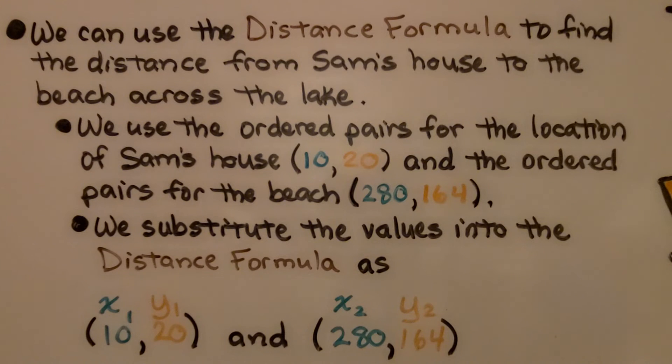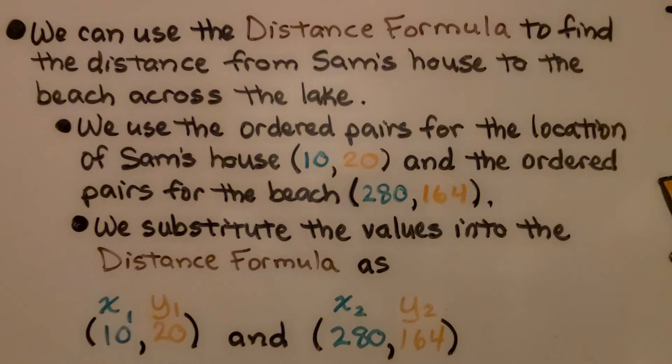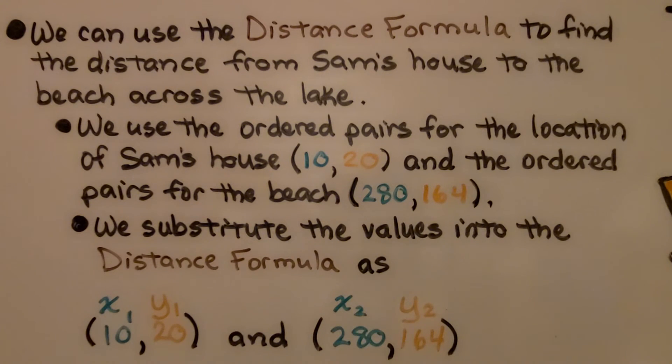We can use the distance formula to find the distance from Sam's house to the beach across the lake. We use the ordered pairs from the location of Sam's house, 10 for x, 20 for y, and the ordered pairs for the beach, 280 for x, 164 for y. We substitute the values into the distance formula as x sub 1 is 10, y sub 1 is 20, and x sub 2 is 280, and y sub 2 is 164.